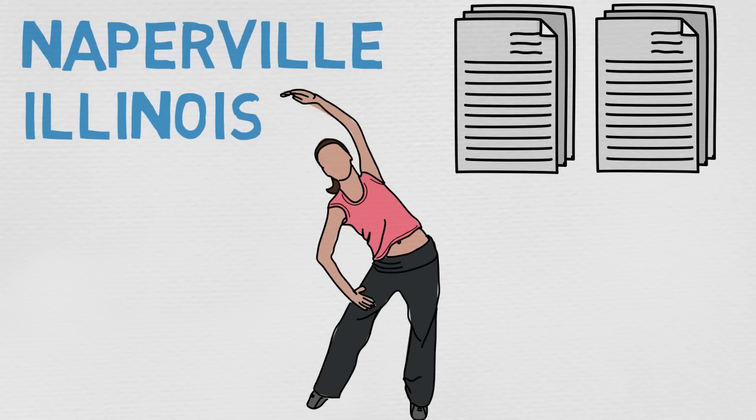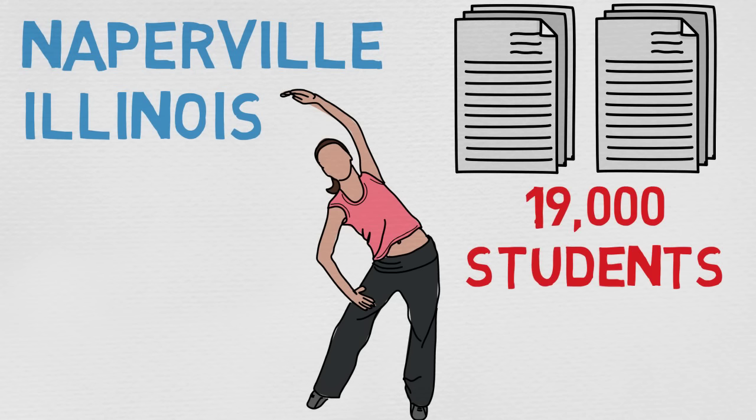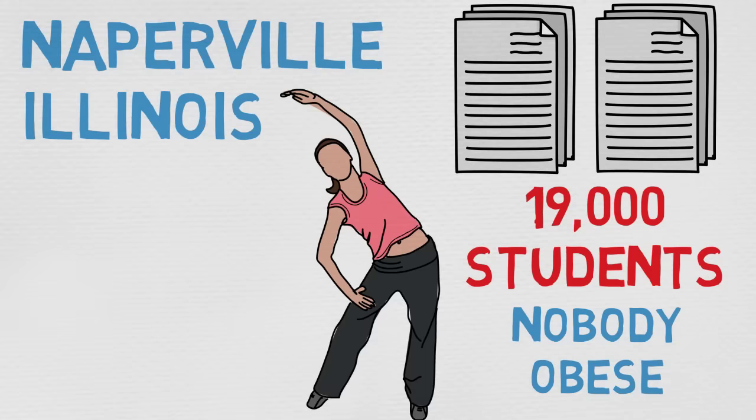As a result, they have turned 19,000 students in Naperville District 203 into one of the fittest in the nation. Only 3% of them were overweight without a single obese child. This was at a time when 33% of America's kids were overweight, with this number increasing to 37 over the past years, and still no sign of stopping.